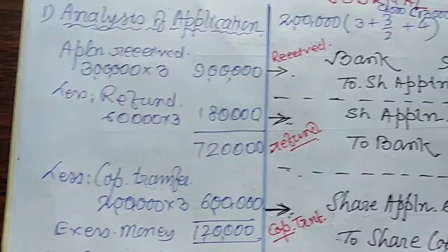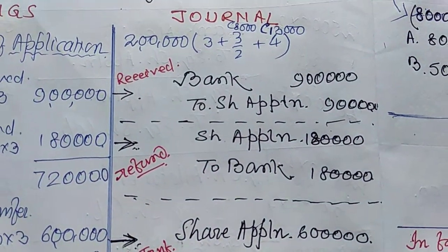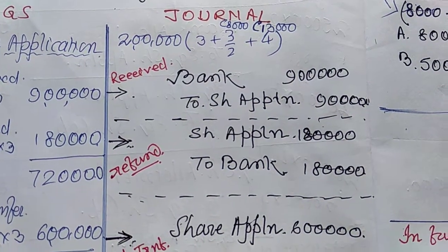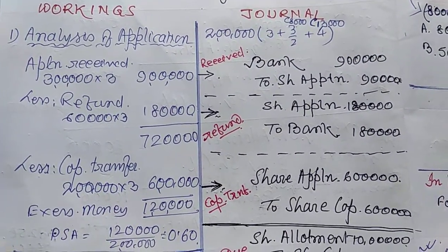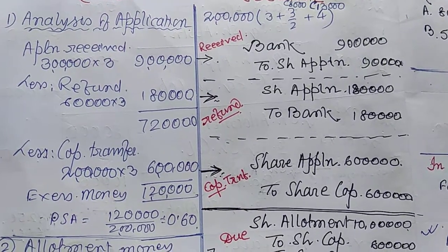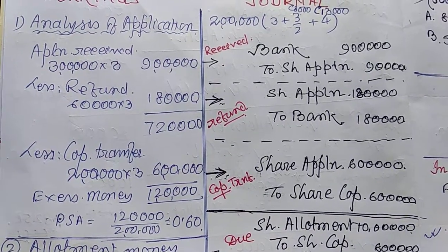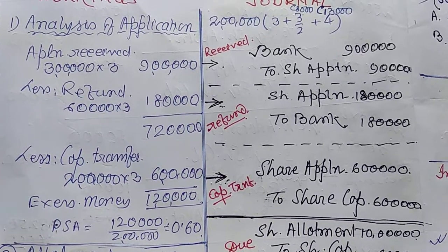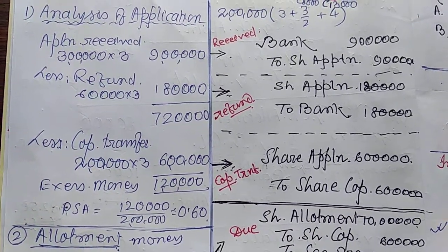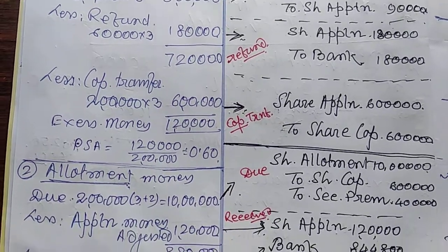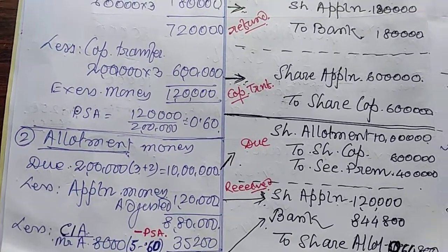Now make the journal. Bank account debit, share application account credit — Rs. 9 lakh. Share application to bank (refund). Then share application to share capital — I have shown this with an arrow from the workings showing the actual amount. Then go to share allotment.